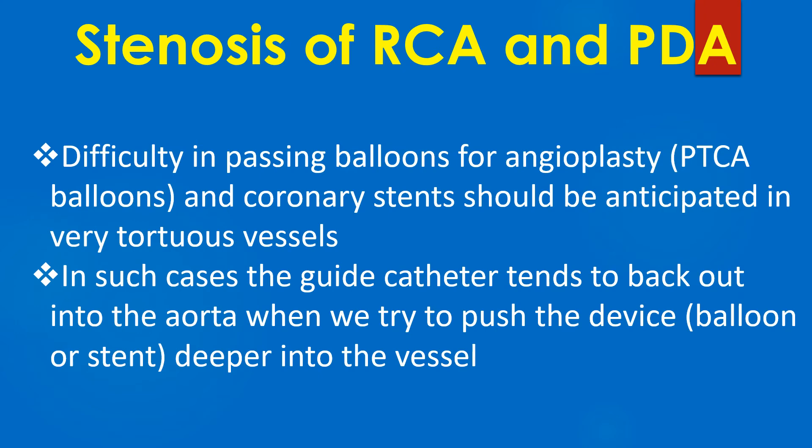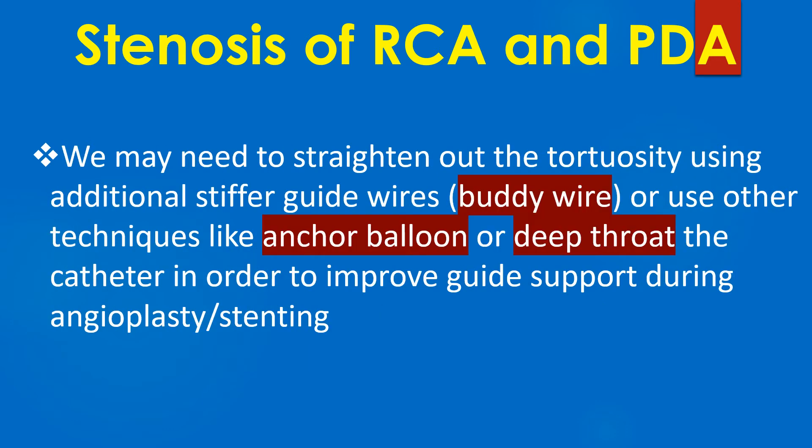Difficulty in passing balloons for angioplasty and coronary stents should be anticipated in very tortuous vessels. In such cases, the guide catheter tends to back out into the aorta when we try to push the device deeper into the vessel. We may need to straighten out the tortuosity using additional stiffer guide wires, or use other techniques like anchor balloon or deep throating the catheter in order to improve guide support during angioplasty or stenting.